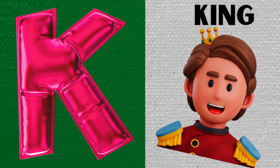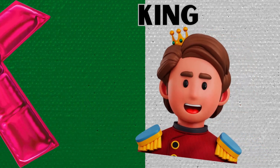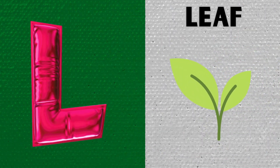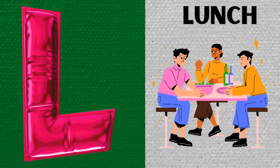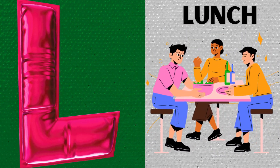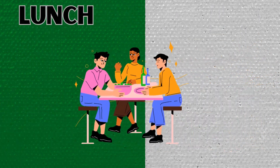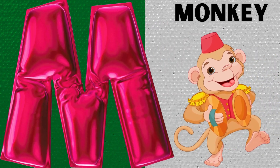K is for King. K, K, King. L is for Leaf. L, L, Leaf. L is for Lunch. L, L, Lunch. M is for Monkey. M, M, Monkey.